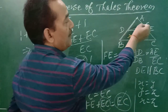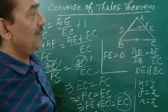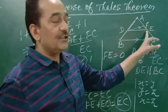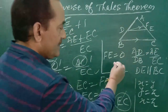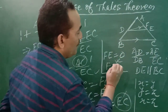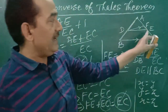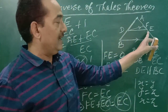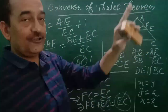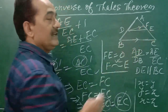FE equals 0. This is possible only if F becomes E. If F is equal to E, and since DF is parallel to BC was our construction, with F coinciding with E, this means DE is parallel to BC.